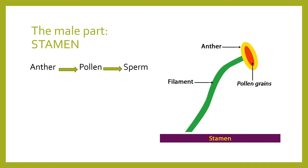The male part — the stamen — is made up of several parts. On top there's the anther, and there's the filament, which is the stalk that holds the anther. The anther is very important because it makes the pollen grains, and inside the pollen grains are microscopic male sex cells called sperm. In grades 3 and 4 we just said 'pollen,' but now we need to know that this yellow powder contains the male sex cell — the sperm — just like in animals.